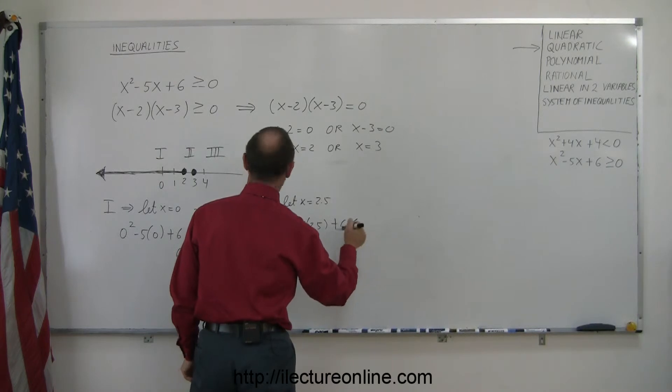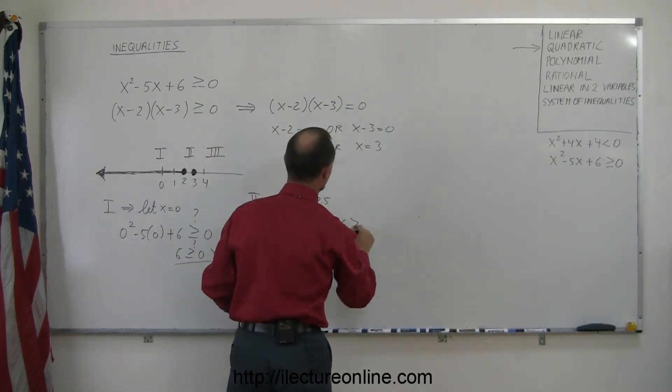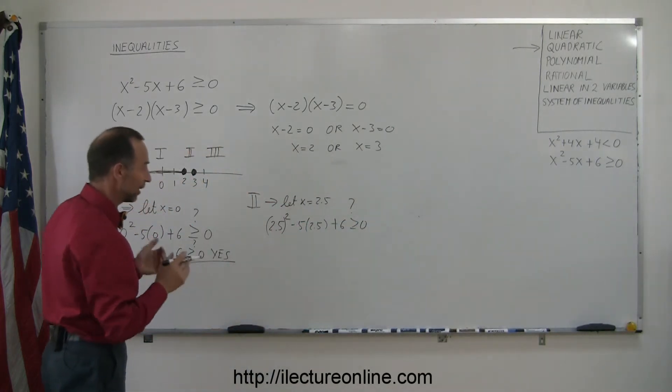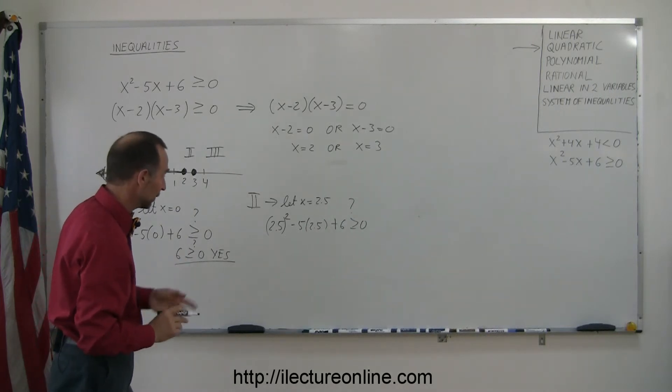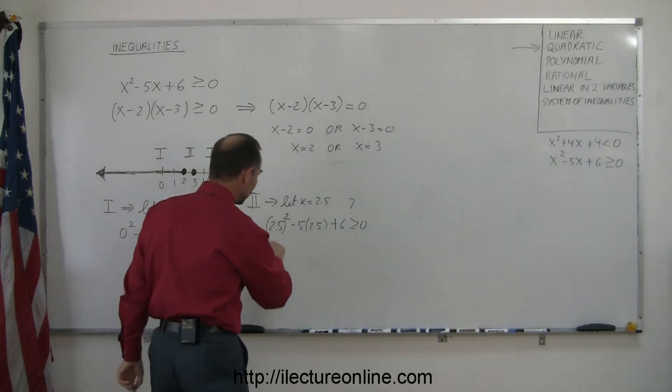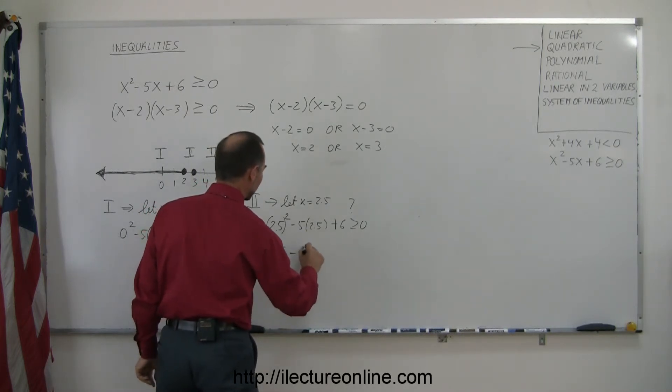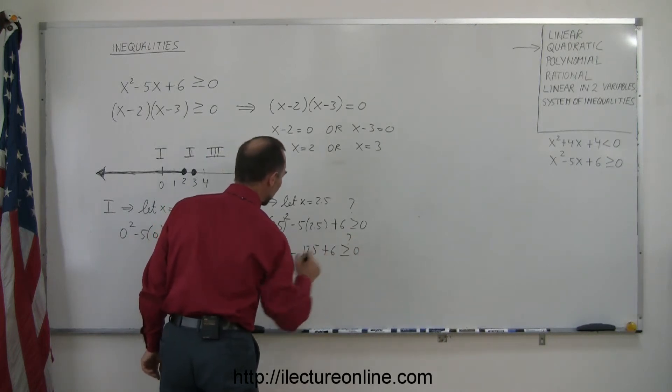And is that greater than or equal to 0? Question mark, of course, we don't know if it is. If it is, that region will be part of the solution. If it's not, it's not part of the solution. 2.5 squared, that's 6.25 - 5(2.5) is 12.5 + 6. Is that greater or equal to 0? Question mark.